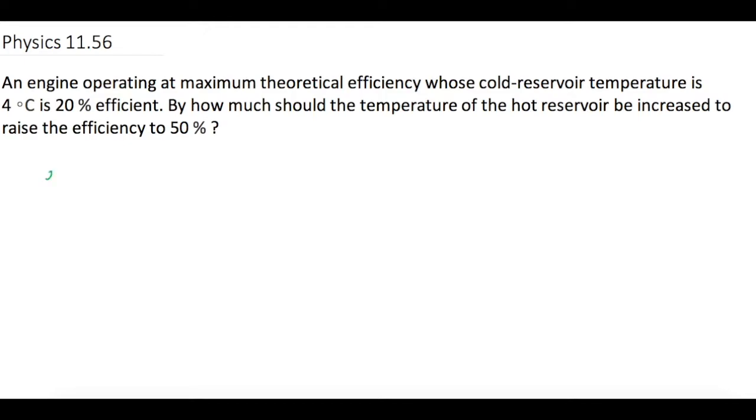So they tell us Emax is equal to 20%, which is 0.2. Okay, so it's running at this Emax, and they say Tc in this case is 4 degrees Celsius. 4 degrees Celsius, so putting that into Kelvin plus 273 is 277 Kelvin.